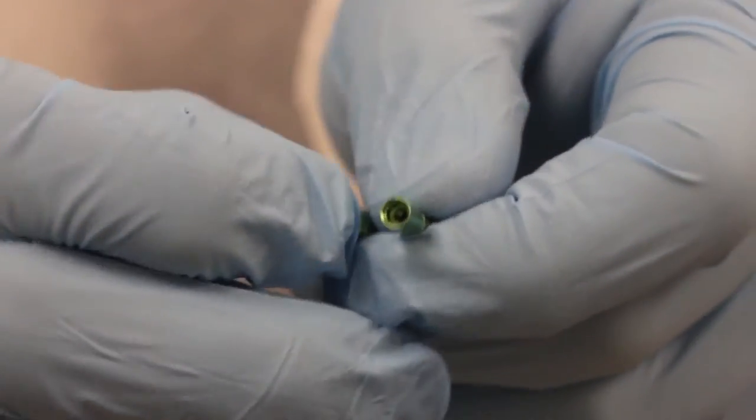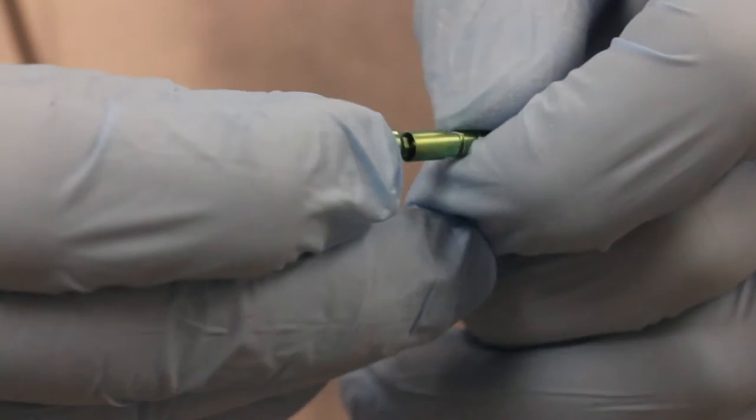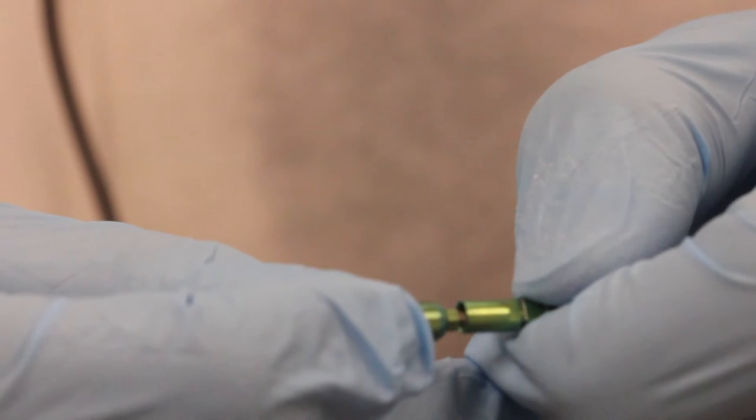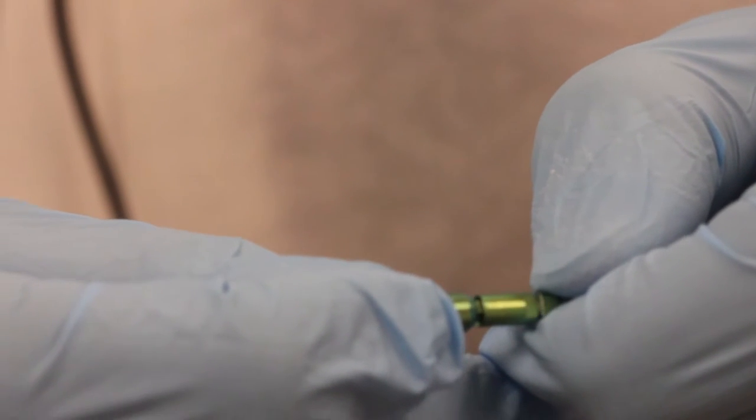On the left, we have the impression coping, and on the right is the implant analog. We call it an analog because it's analogous to the implant, or it mimics the implant. The impression coping has a hex, and it inserts into the analog.